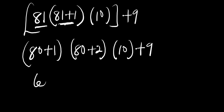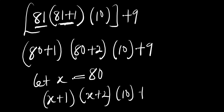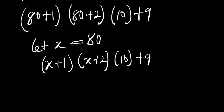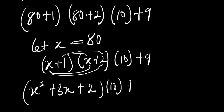At this point we let x equal 80. We are going to have (x + 1)(x + 2) times 10, plus 9. Expanding: x times x gives x squared, x times 2 gives 2x, 1 times x gives x, and 1 times 2 gives 2. So we have x squared plus 3x plus 2, all multiplying 10, plus 9.